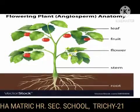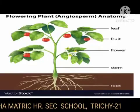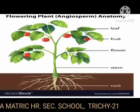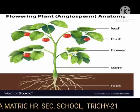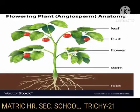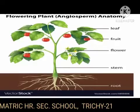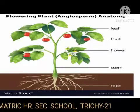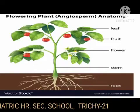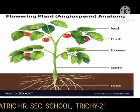Characteristics of a leaf: a leaf is a lateral appendage of the stem, born at the node of the stem. It is exogenous in origin, has limited growth, and does not possess an apical bud. It has three main parts: leaf base, petiole, and lamina. The lamina of the leaf is traversed by vascular strands called veins.